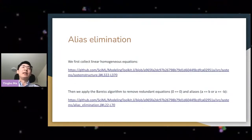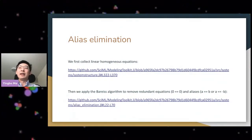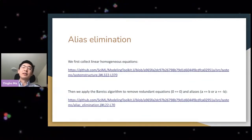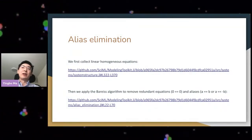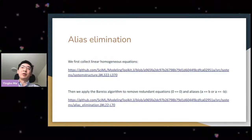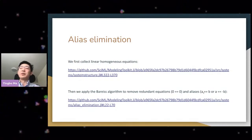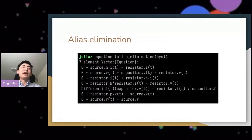In the implementation of alias elimination inside ModelingToolkit, we first collect all the linear homogeneous equations, then apply the Bareiss algorithm to remove redundant equations and aliases. Removing redundant equations is important because component-based modeling can generate degenerate equations that say the same thing, which would make the Jacobian singular. Aliases are simply in the form A equals B or minus B equals A. After running alias elimination, we get seven equations instead of 20.